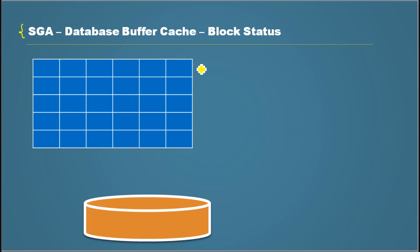In the previous video, we talked about how Oracle organizes the way data is accessed from the database buffer cache, as well as the way it's written to the database buffer cache. In this video, we will look into how those organizations are done.